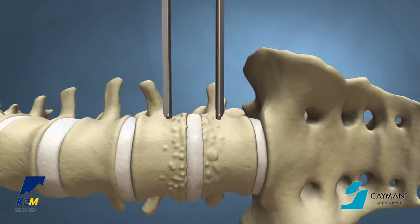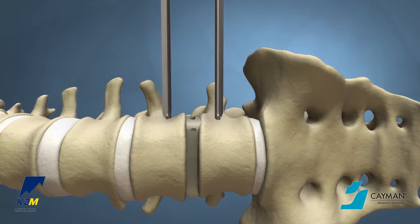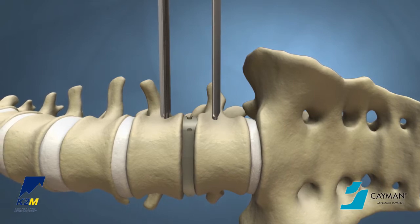After appropriate disc removal and end plate preparation, the elution lateral interbody is inserted. It is important to prepare the lateral surface of the vertebral body and make certain there are no large osteophytes.